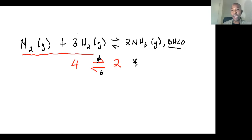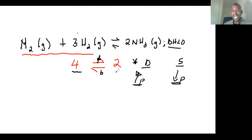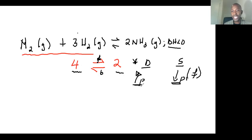Now let's play around with pressure. If I increase the pressure, according to Le Chatelier the system must find a way to decrease pressure. To decrease pressure means to move from the reaction with a greater number of moles to the one with a lesser number of moles — from four to two. So an increase in pressure will favor the forward reaction.